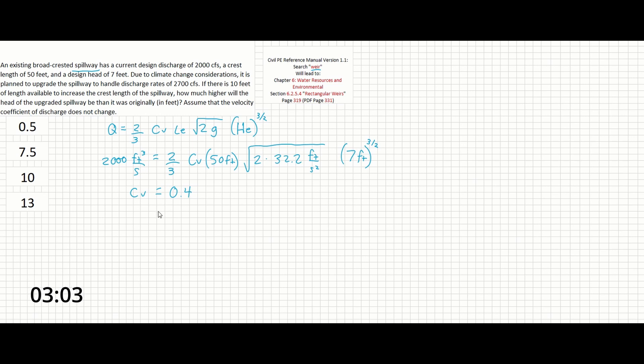So now that we have this CV, and the problem states that the coefficient of discharge here isn't going to change between designs, what we can do is use that value along with the changes for the upgraded spillway, so changes to the flow and length, to solve for the new head.